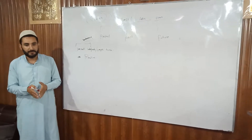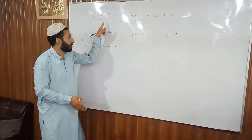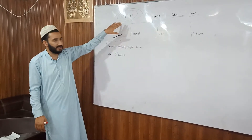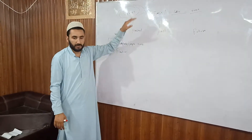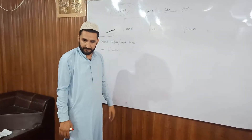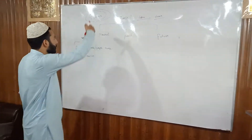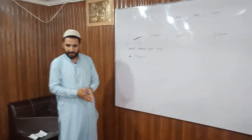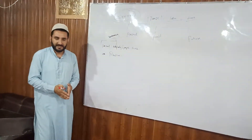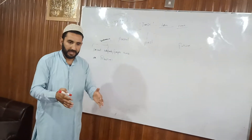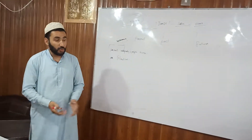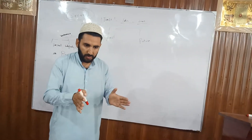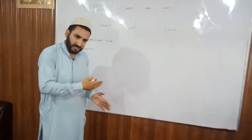When we talk about time, we have the structure of an English sentence. The simple structure of an English sentence is subject, verb, and object. If I want to talk about the subject — subject means the doer: Ahmed, Azmad, doctor — many nouns. When I am talking about a noun, noun has nothing to do with time.